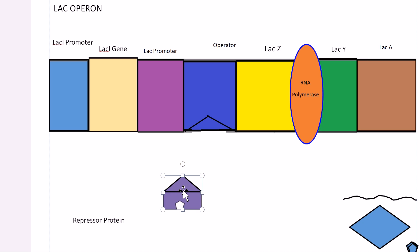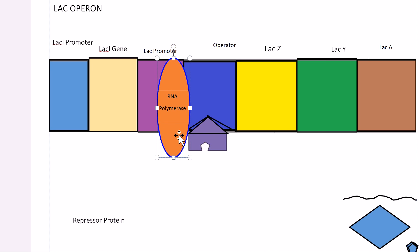The repressor now returns to its original shape once the lactose concentration in the cell decreases, and it again binds to the operator, stopping RNA polymerase from transcribing the genes. It physically stops it, cannot continue through. The repressor is again in an active state.